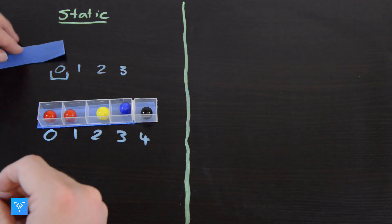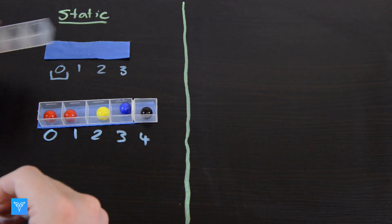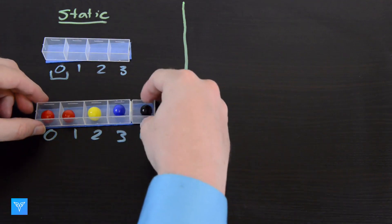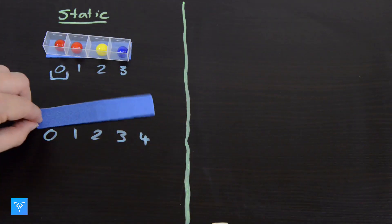Deleting an element is the same process in reverse. First, we make space for the smaller array, create the new array, copy the desired elements over, and delete the previous array.